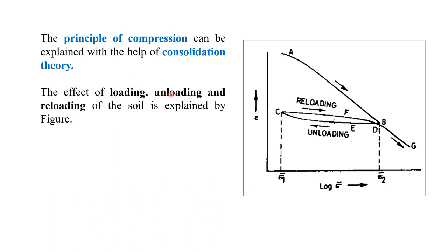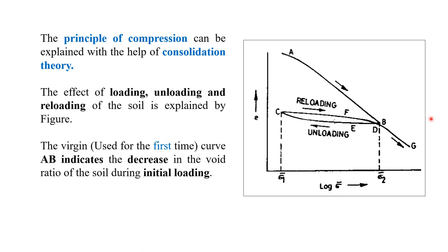The effect of loading, unloading, and reloading of soil is explained by a figure where the y-axis shows void ratio and the x-axis shows log of effective stress (sigma bar). Virgin soil is soil which has not had any construction carried out on it earlier. The curve AB indicates the decrease in void ratio of the soil during initial loading at the construction site.